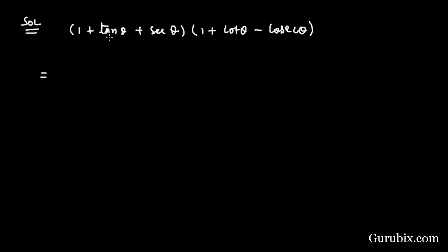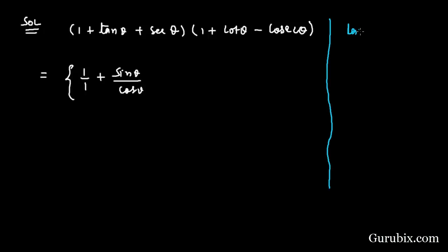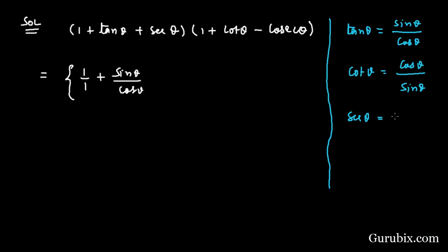We shall change tan θ into sine and cosine, sec into cosine, cot into cosine and sine, and cosec into sine. The formulas are: tan θ = sin θ / cos θ, cot θ = cos θ / sin θ, sec θ = 1 / cos θ, and cosec θ = 1 / sin θ. These are the four formulas we shall use.